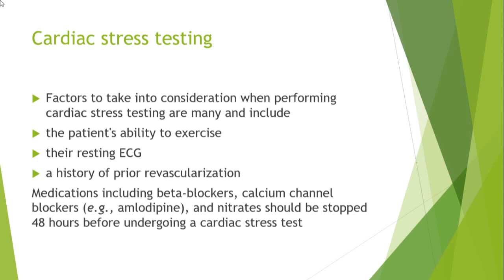Also important to consider is the history of prior revascularization. Another important factor is medication. You should take a history of drugs like beta blockers, calcium channel blockers, and nitrates — the anti-anginal drugs that reduce the load on the heart. You want to stop those drugs before the test because they will interfere with your results. Stop them about 48 hours before the test to allow them to wash out from the patient's body.